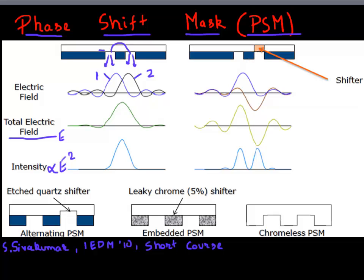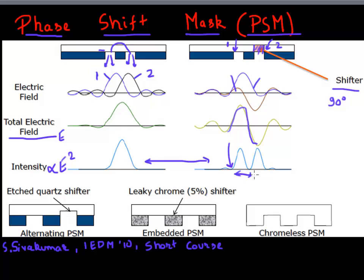What phase shift mask involves is that you add a shift in the phase of the light — you add or remove some optical path in the path of the light from the second feature. So there's a shift in the phase, say a 90-degree shift. The electric fields from these two neighboring patterns then add up to give a pattern where the intensity resolves the neighboring features very well. Previously they were interfering and giving a blurred feature, but by adding this phase shift you can now preserve the two features separately.